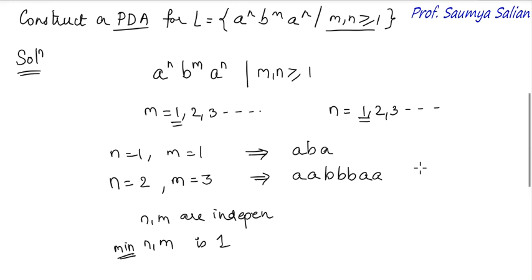The only thing we need to be concerned about is that the number of A's before the B's should match the number of A's after reading all B's — that is, this n and this n must match. Also, there must be at least 1 B. We are not bothered about how many B's there are; the only pattern matching required is between the first group of A's and the last group of A's.